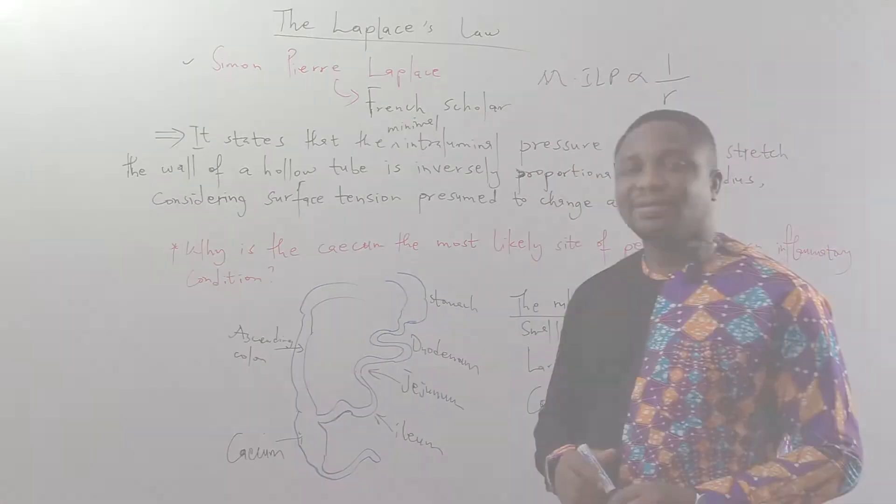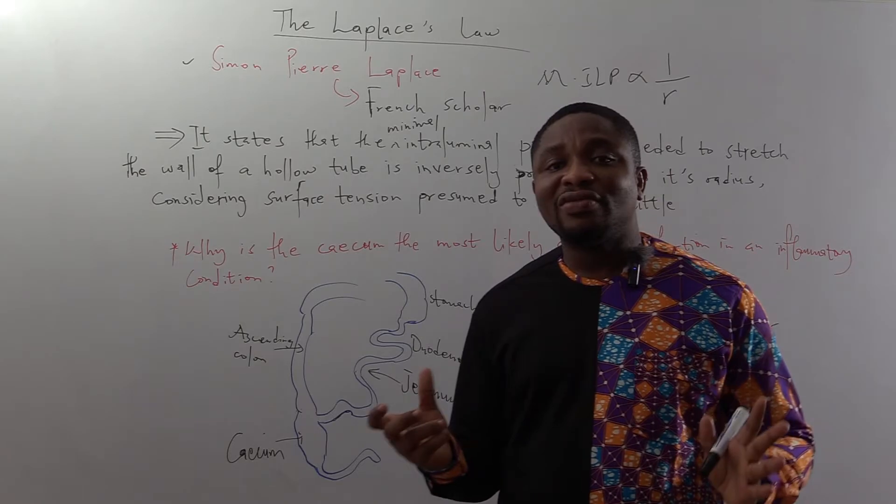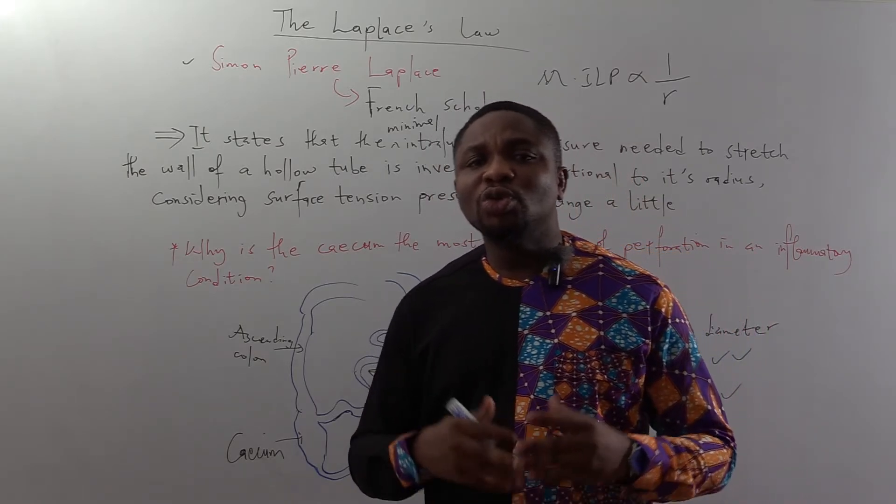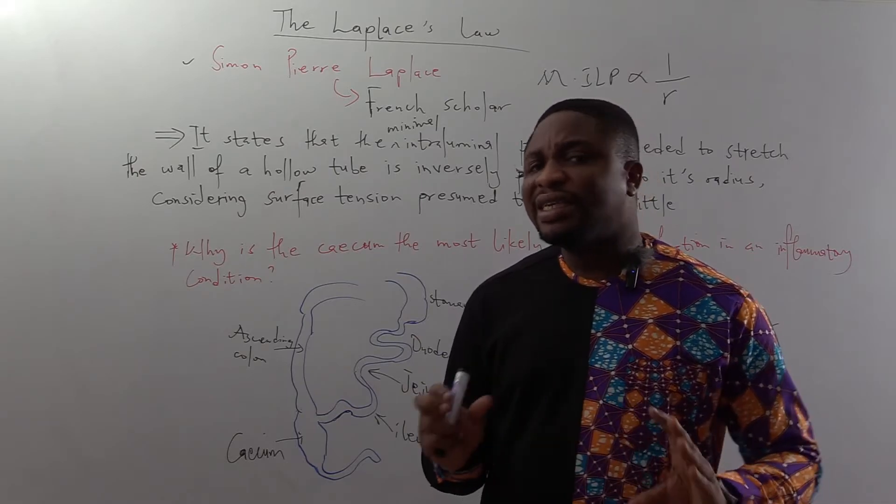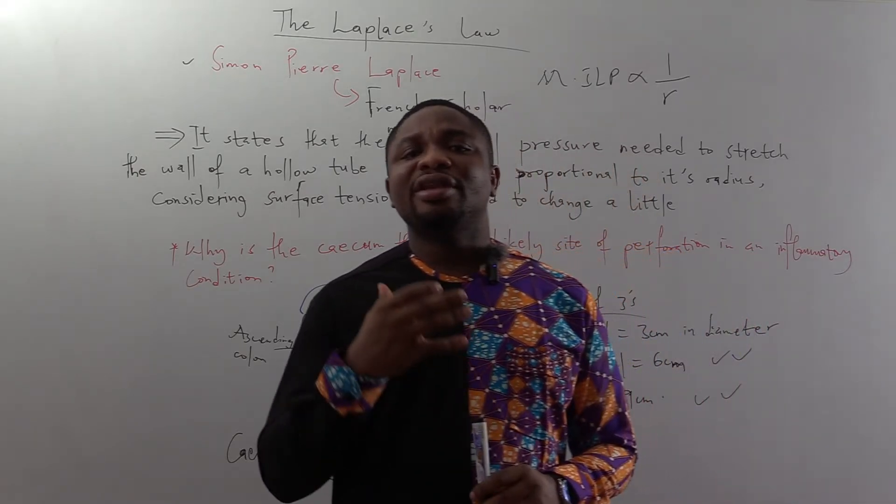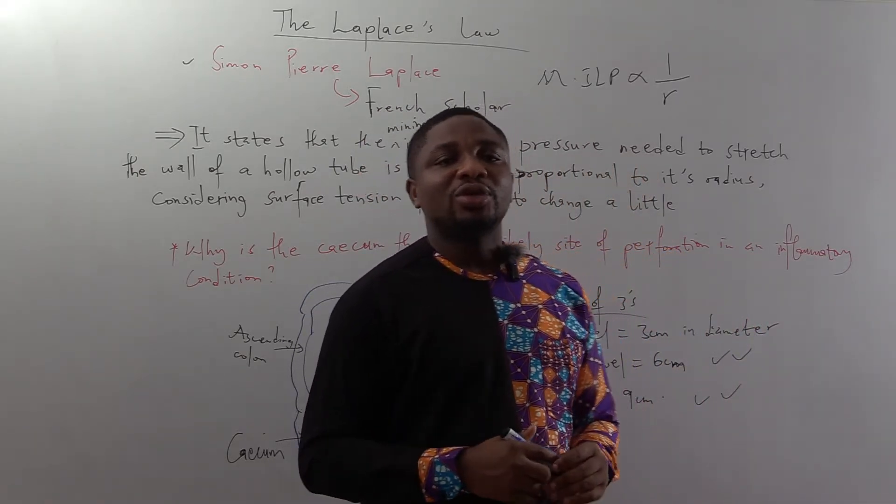We will make reference to the diameter of the lumen. In that case, we will use a simplified rule, the rule of three, which is going to be explained in a different manner, meaning that everything will be divisible by three.